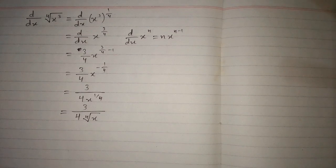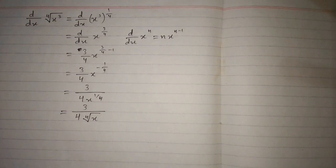Therefore, the derivative of the 4th root of x cubed is 3 divided by 4 times the 4th root of x.